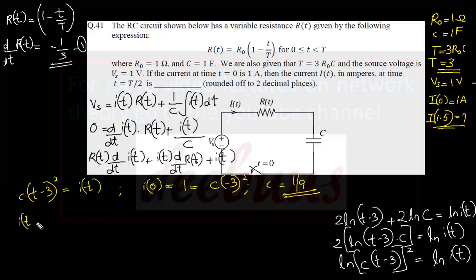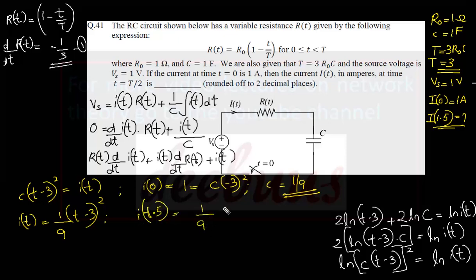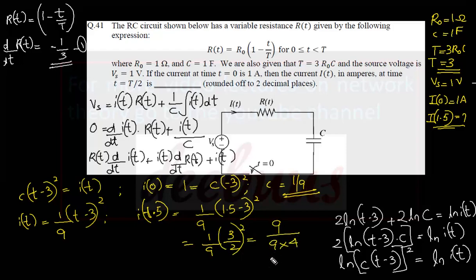Substituting: I(T) = (1/9)·(t−3)². We have to calculate this at t = T/2 = 1.5. So I(1.5) = (1/9)·(1.5−3)² = (1/9)·(−1.5)² = (1/9)·(9/4) = 1/4 = 0.25 amperes. So the answer is 0.25 amperes. For more tutorials on GATE portions from electronics, communication, and electrical related topics, subscribe to my channel.